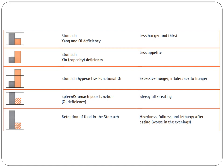Next tower diagram: spleen and stomach poor function. There is a chi deficiency, so the patient feels sleepy after eating.